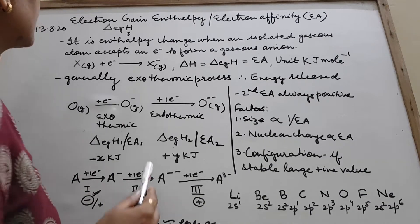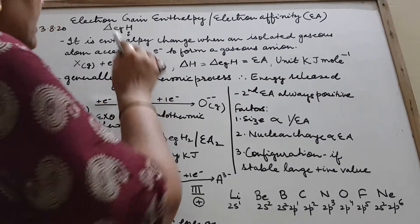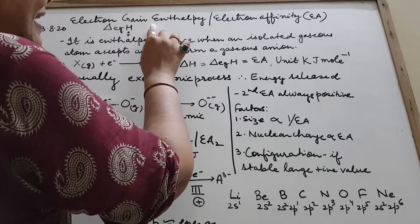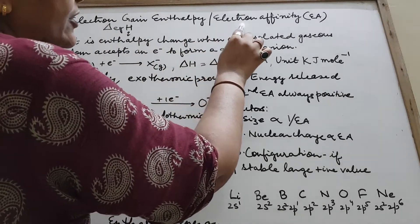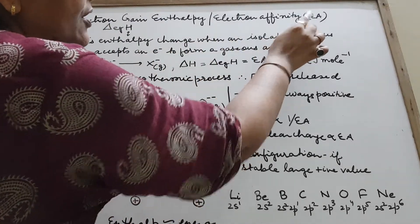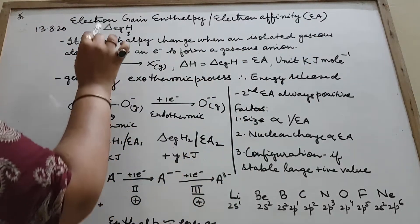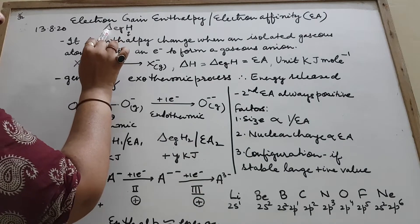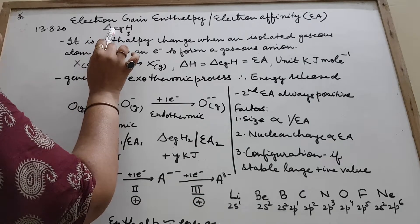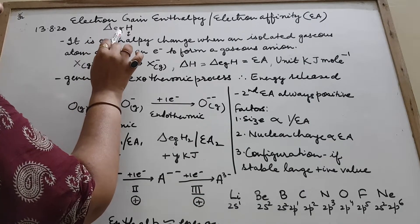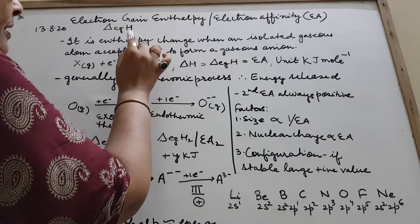Good morning children. Today we will study about electron gain enthalpy, or call it electron affinity, in short EA. It is known by the symbol ΔegH, where H stands for enthalpy.